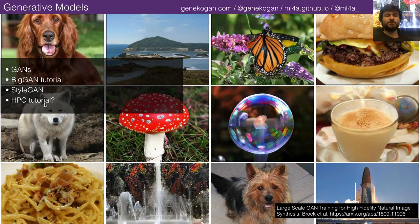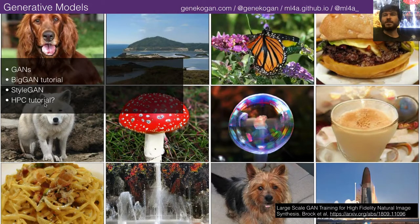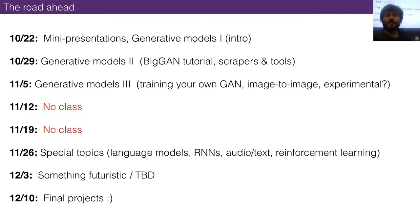We may also get to StyleGAN today, though that might have to wait until next week. There was actually a post about a new ground-up implementation of StyleGAN with different resolution options, which is really cool — StyleGAN has been square for a long time. So the schedule: last week presentations and intro to generative models, this week the BigGAN tutorial and dataset scraping tools.